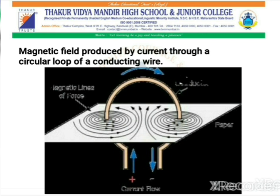The intensity of the magnetic field at any point produced by a current flowing through a wire is dependent on the current. This means that if there are N turns in the loop, the magnetic field will be N times that produced by a single loop. As the number of loops increases, the magnetic lines of force will increase, and the magnetic field will increase. That is about the magnetic field produced by a current through a circular loop.